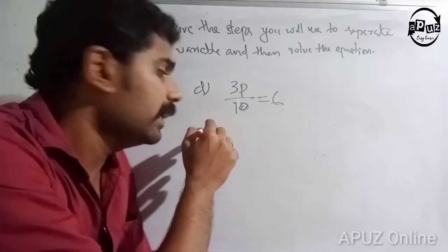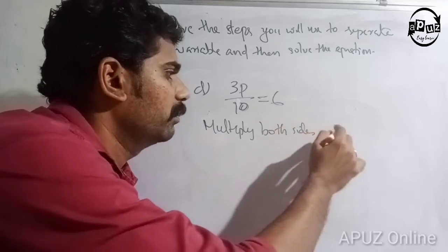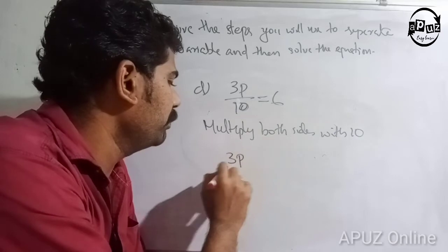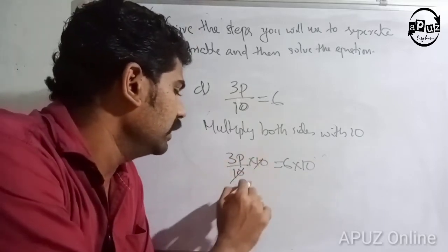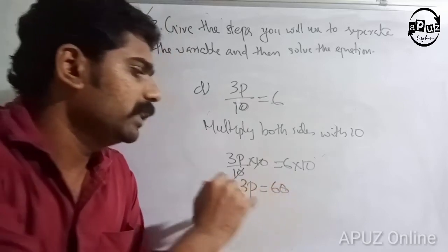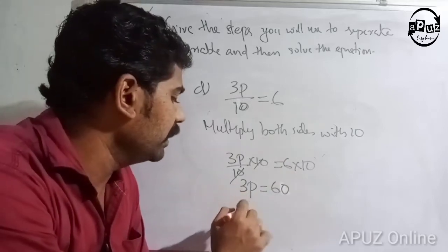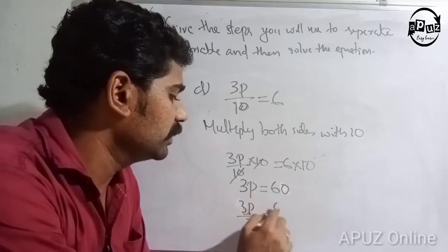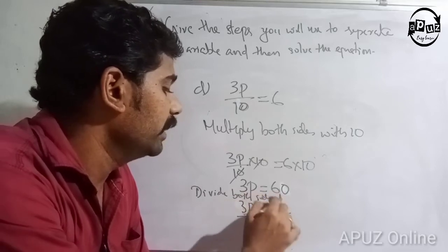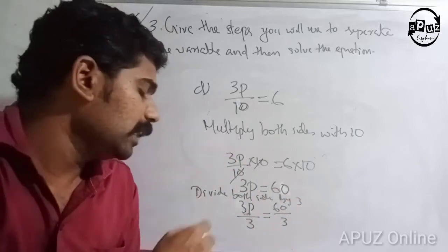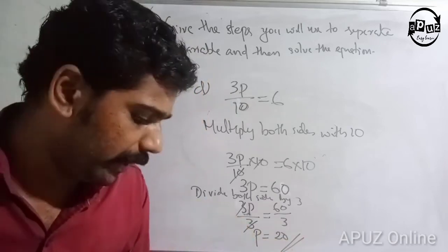Why do we divide by 10? The first step is to multiply both sides by 10. We multiply 10 by 10, which cancels, so 3p is equal to 60. Then divide both sides by 3: 3p divided by 3 is equal to 60 divided by 3. So p is equal to 20. That is the answer.